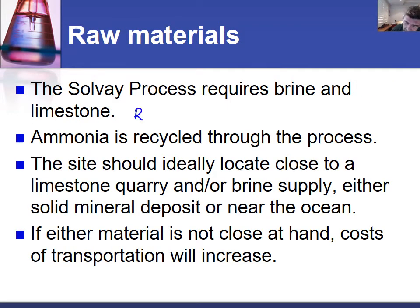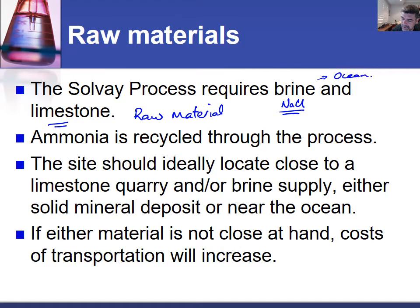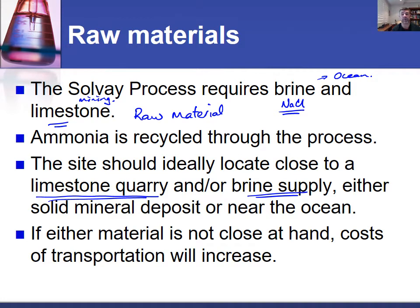The raw materials for the Solvay process are brine or salt — sodium chloride — usually found in seawater, and limestone. Obviously this is good if you're somewhere near the ocean, and limestone is good if you're located somewhere near a mine so we can extract it readily. Ammonia is recycled through the process, so locating the site close to a source of ammonia is less of a consideration. Therefore, proximity to the limestone quarry and the brine supply are ideal to ensure limited costs associated with extraction and transportation to the plant.